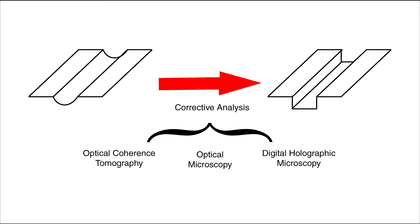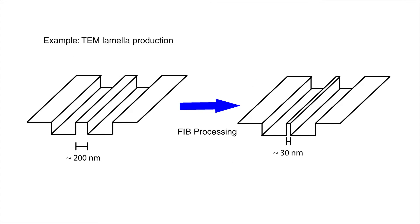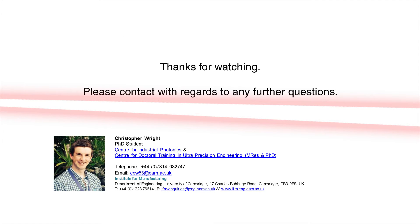These metrology systems can be used to give geometrical feedback on milled features to allow for in-process correction. The final stage of the project will be to take a sample milled on the ultrafast platform and transfer it to the focused ion beam for further machining. Thank you for watching and please contact me about any further questions.